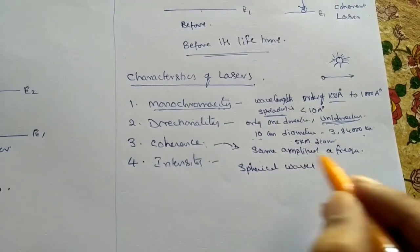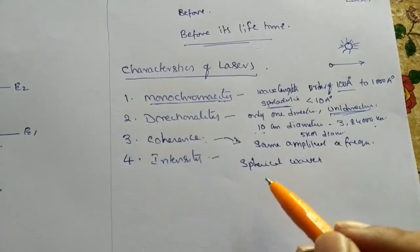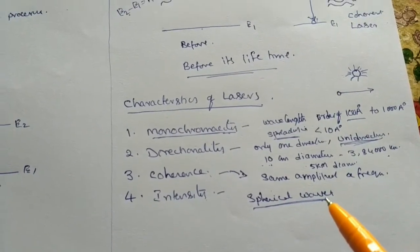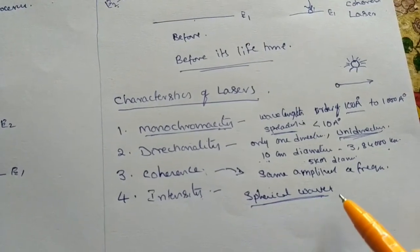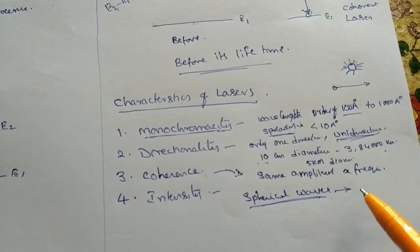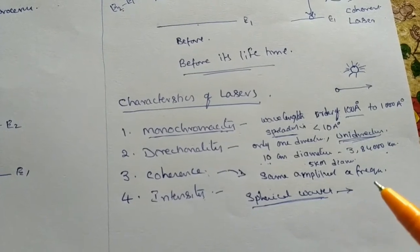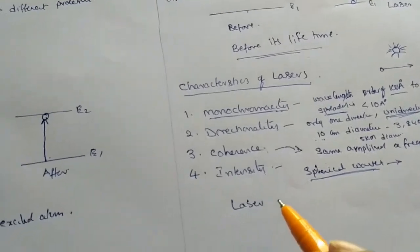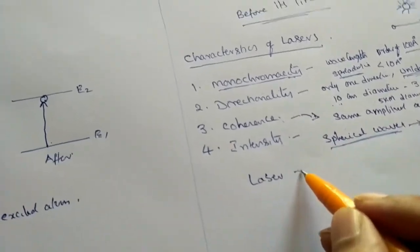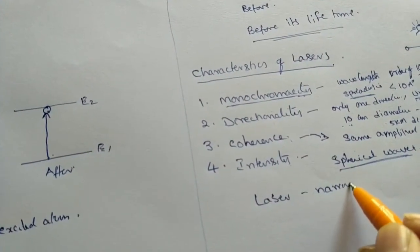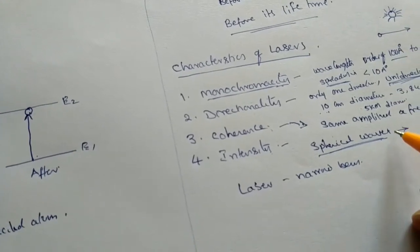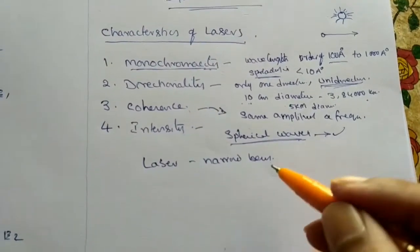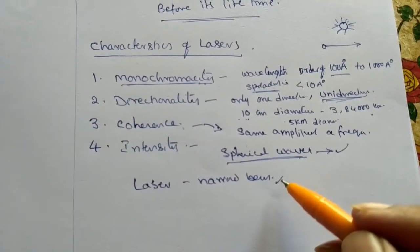The spherical waves are decreasing with intensity by traveling long distances. But laser emits a narrow beam. These circular waves interact with nature very fast, but narrow beam lights do not interact that much with atmosphere.